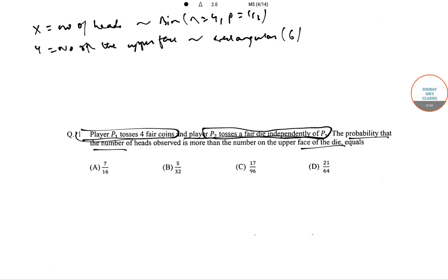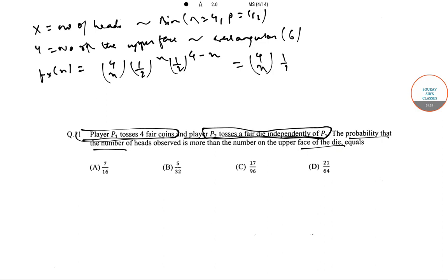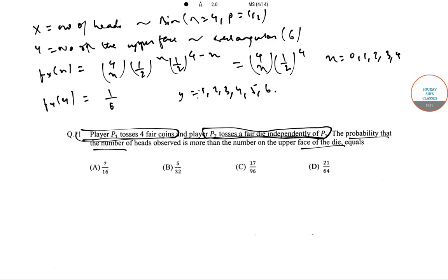Since X and Y are independent, the PDF of X is f(x) = 4Cx * (1/2)^4, for x = 0, 1, 2, 3, 4, and f(y) = 1/6 for y ranging from 1 to 6.